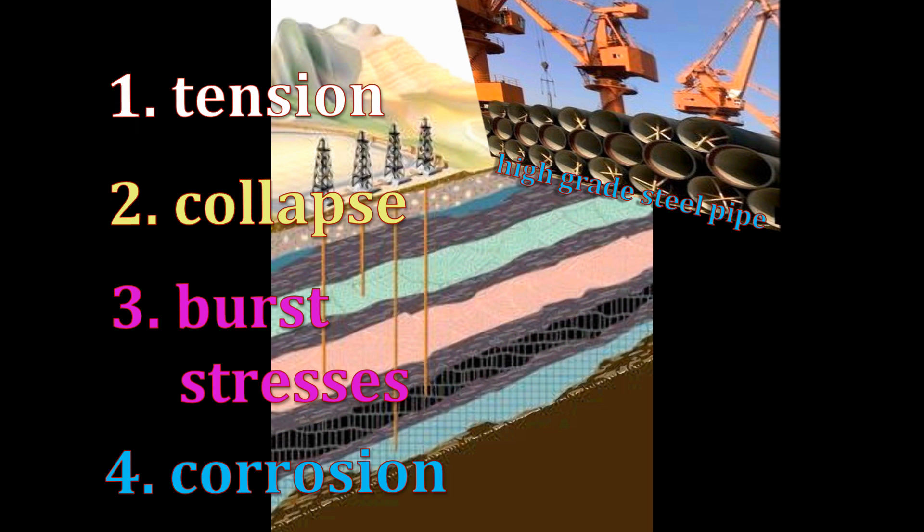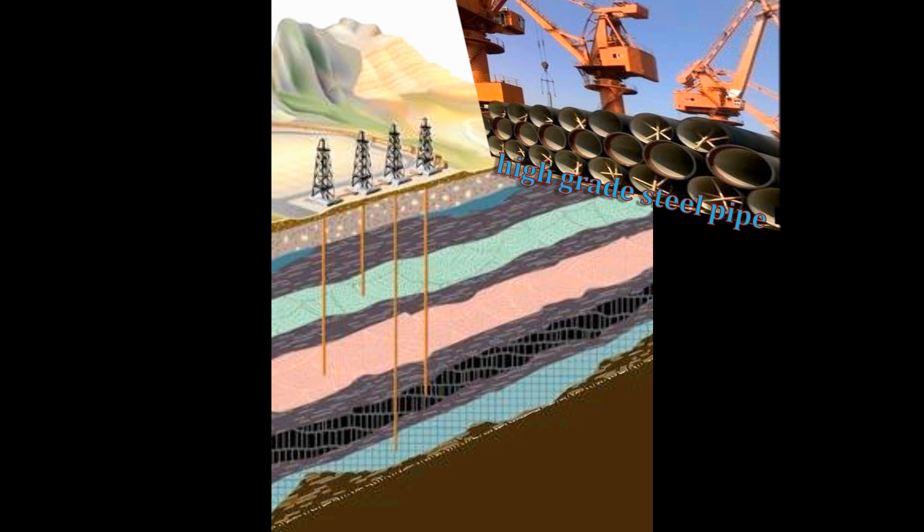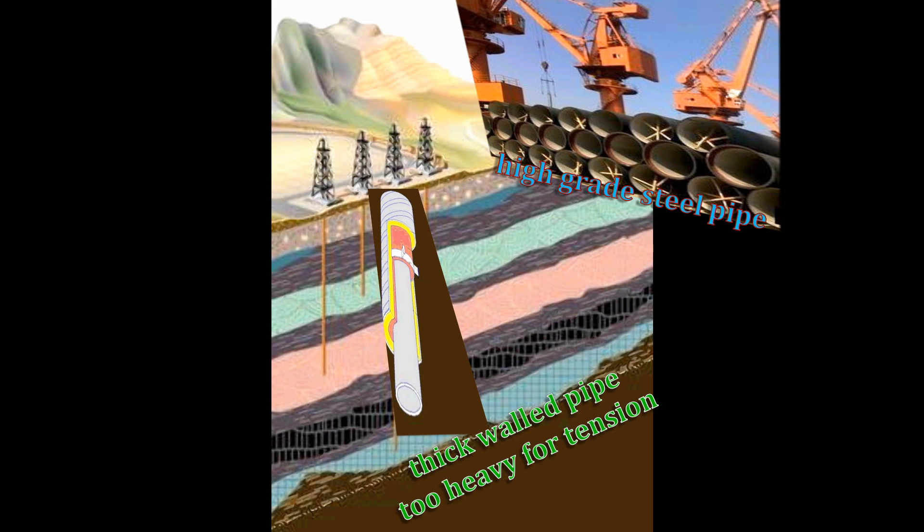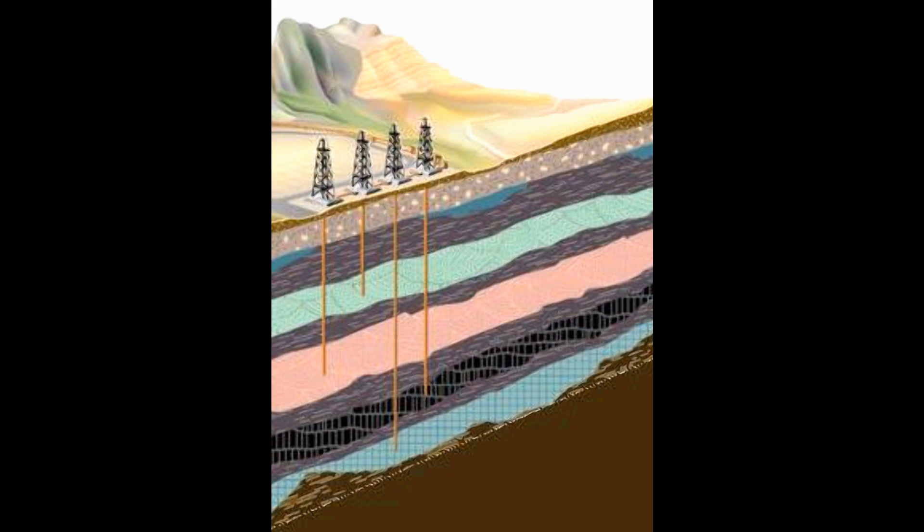In deep wells, higher grade pipe must be used to get the necessary strength because too thick walled pipe can be too heavy for the tension. Higher grade pipe, however, is more susceptible to corrosion.